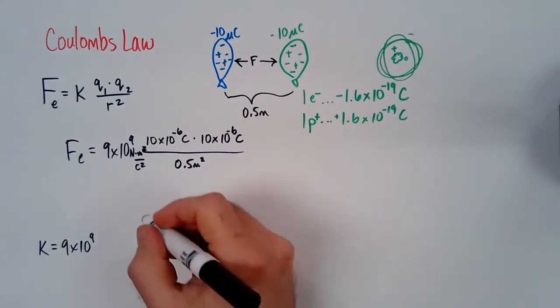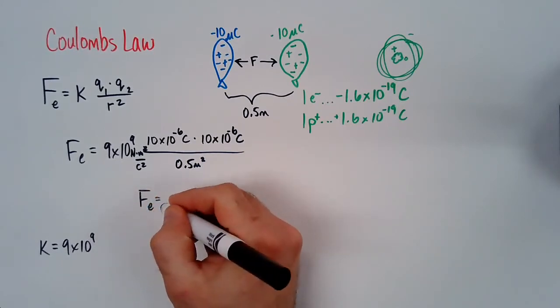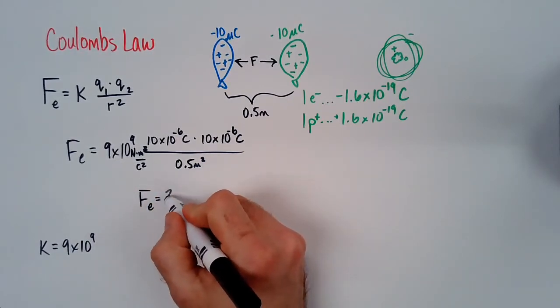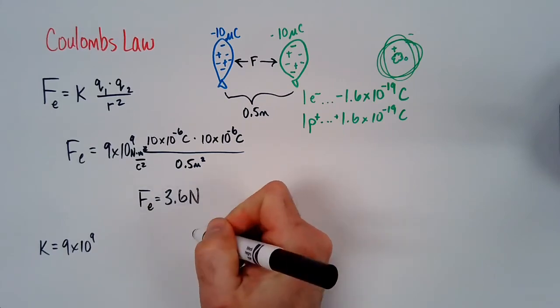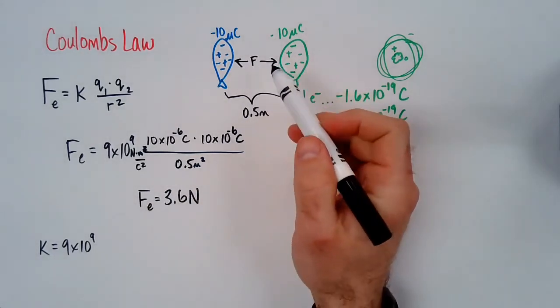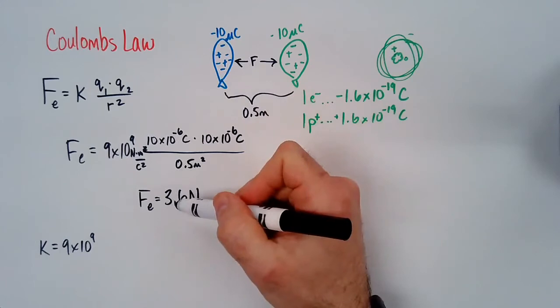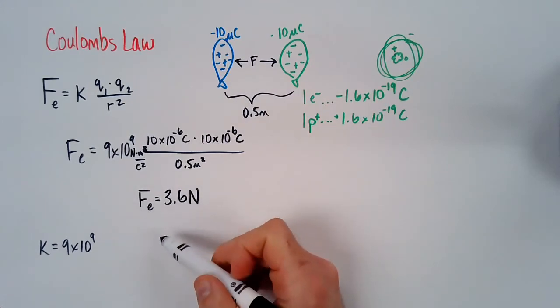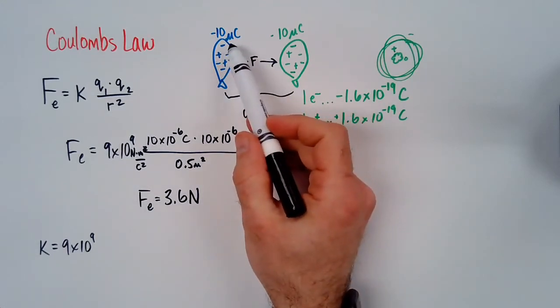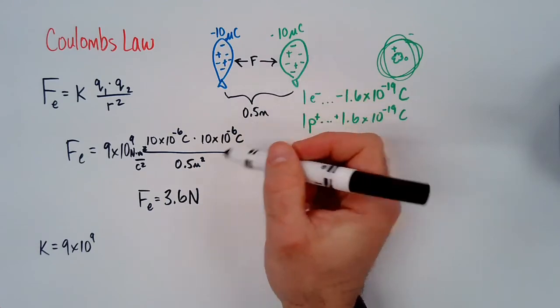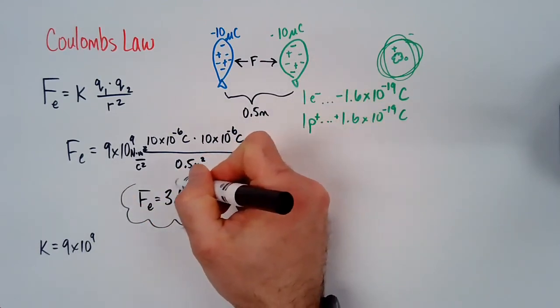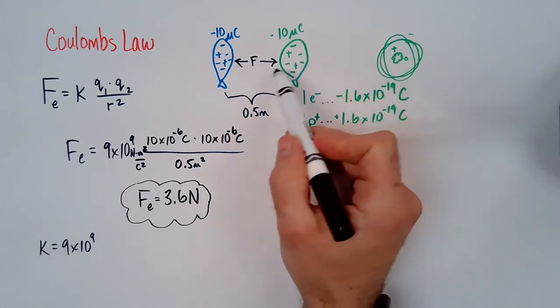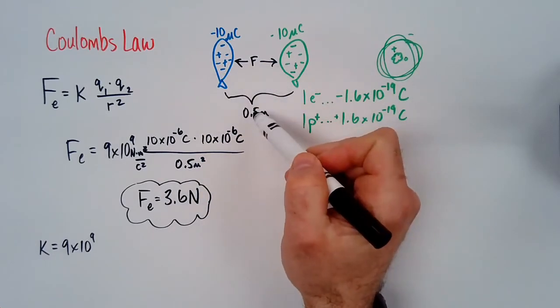Okay, when you put all that in your calculator, be careful with scientific notation. You should get 3.6 Newtons, which is actually pretty huge when you think about balloons being rubbed. That's probably unrealistic, which just means that my made up 10 micro Coulombs would be too much for real balloons. But that's what Coulomb's law would say based on the amount of charge and the distance between them.